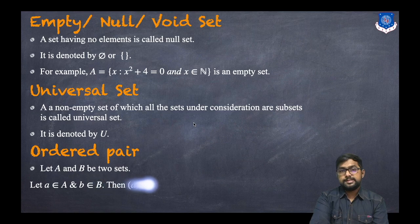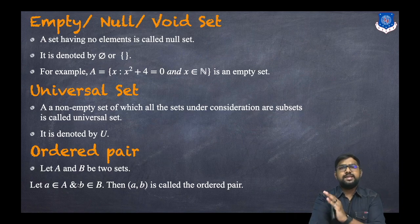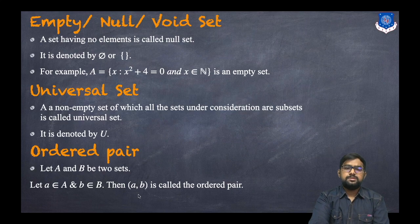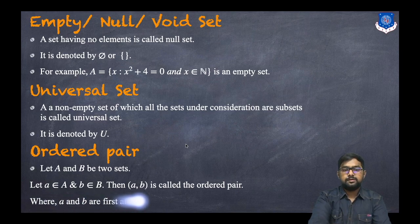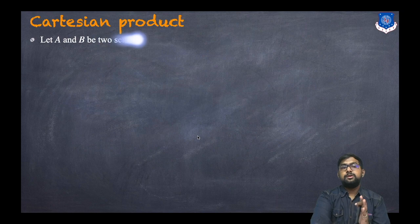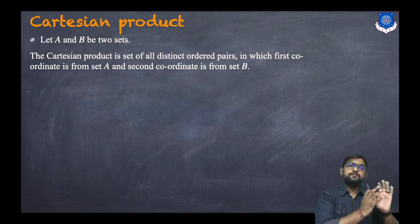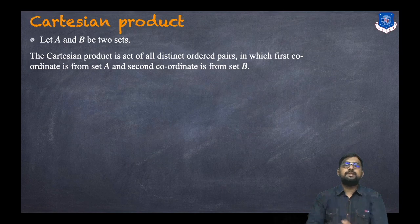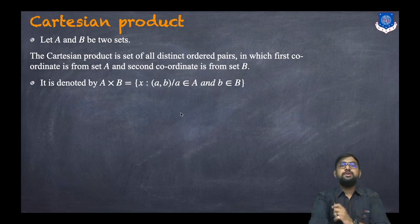An ordered pair: let A and B be two sets, with element a from set A and element b from set B. The combination (a, b) is called an ordered pair, where a and b are the first and second coordinates respectively. The Cartesian product A × B is the set of all distinct ordered pairs where the first coordinate is from A and the second is from B.